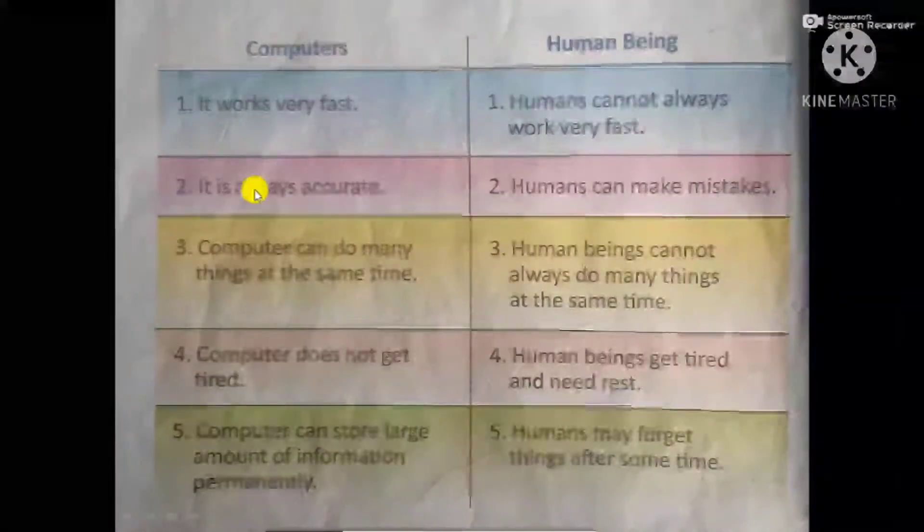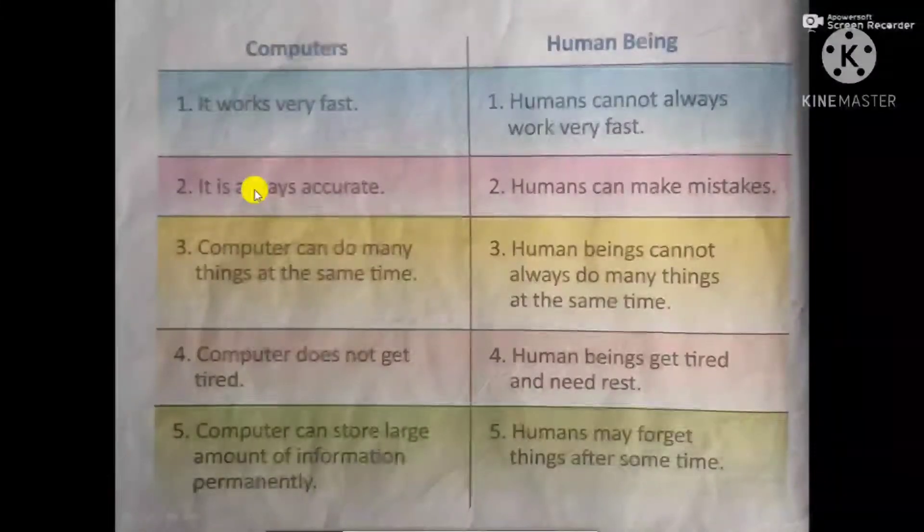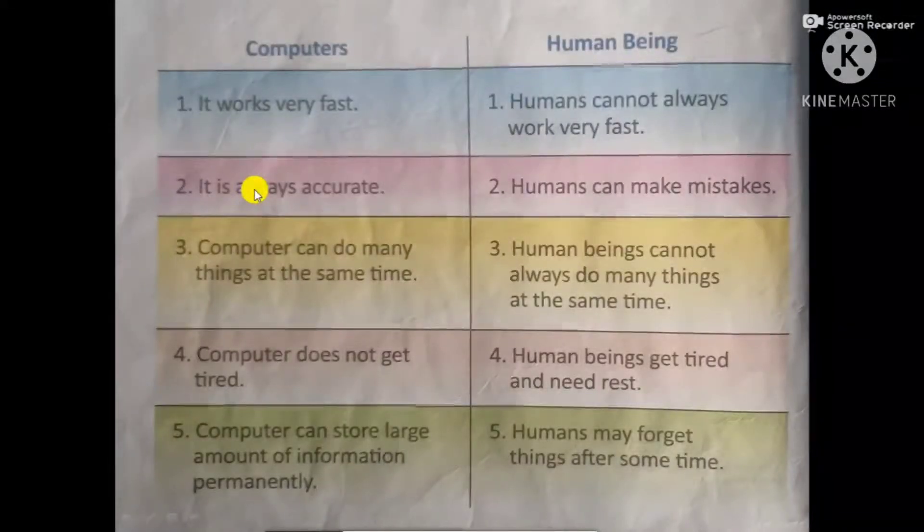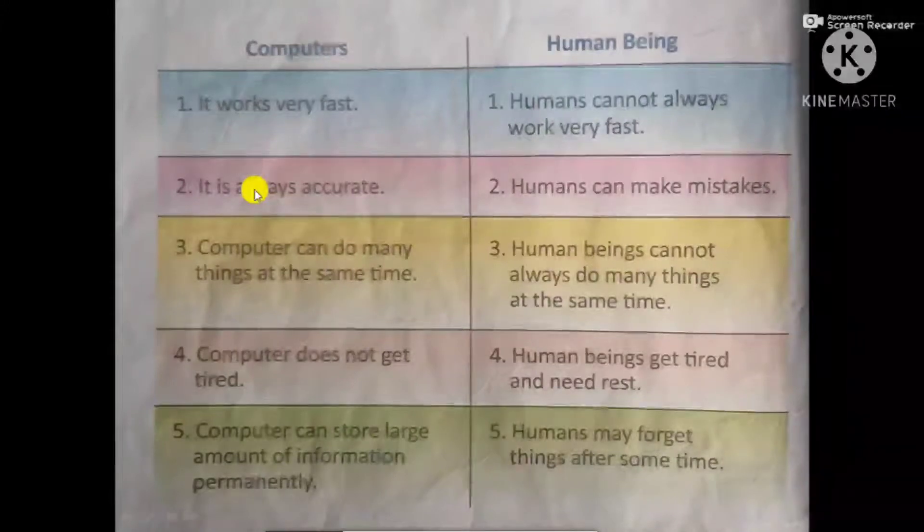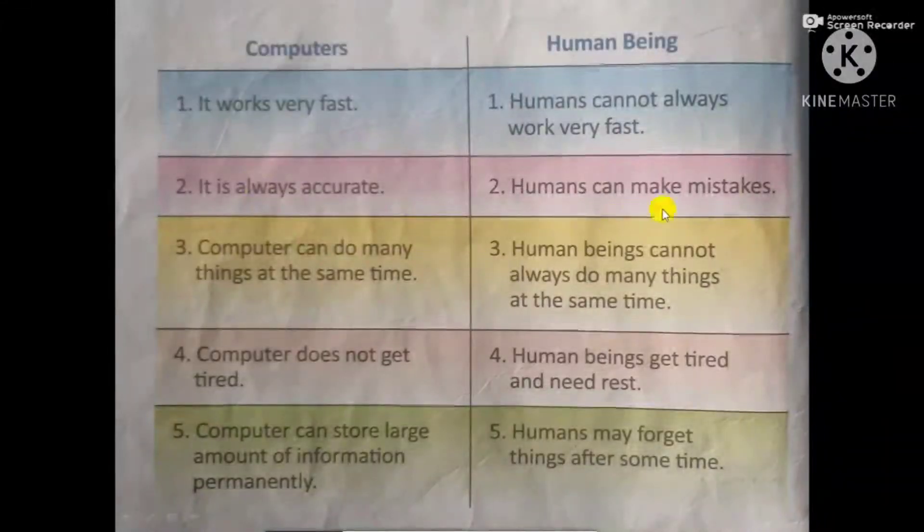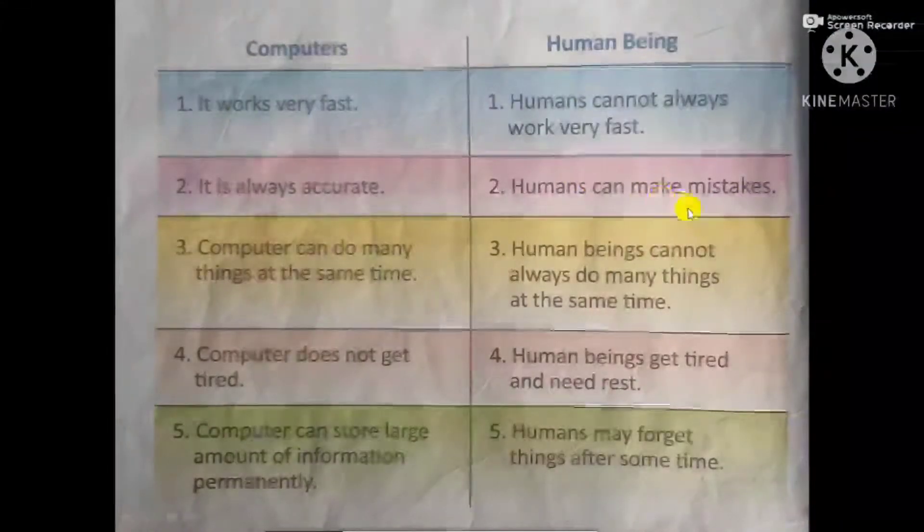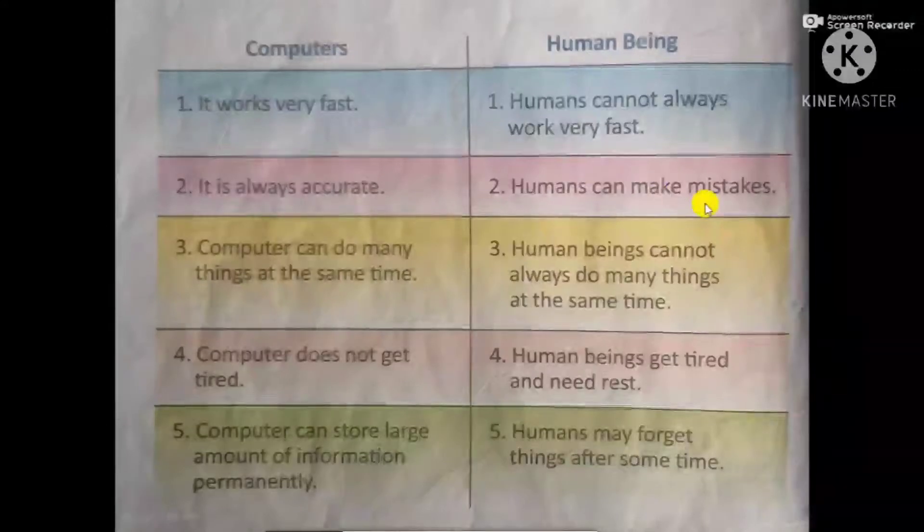Second, it is always accurate. Computer never makes mistakes. Mistakes can be made by us but not by computer. Humans can make mistakes. We are not accurate.